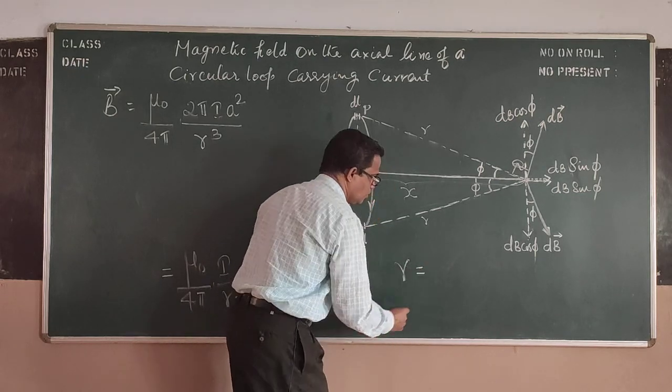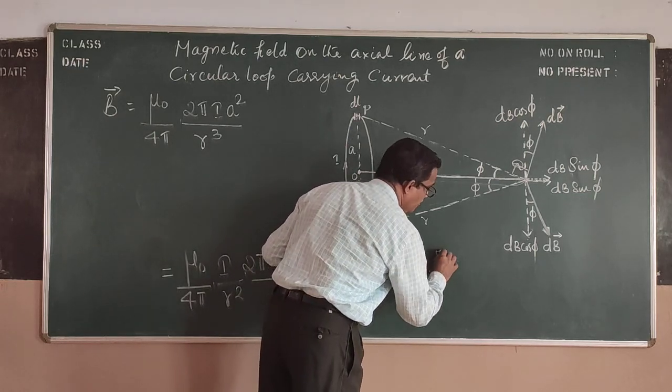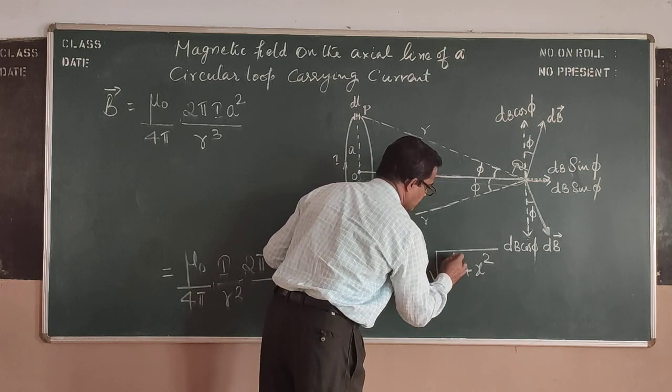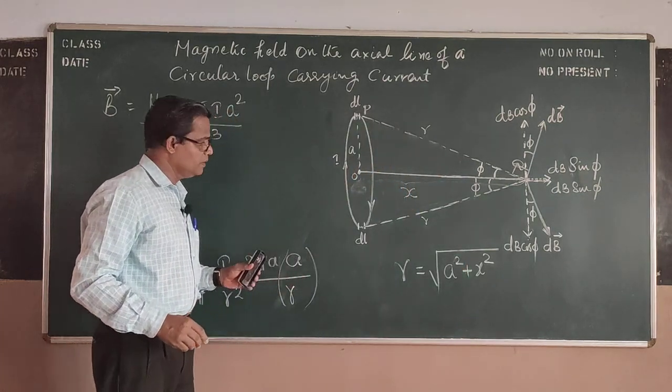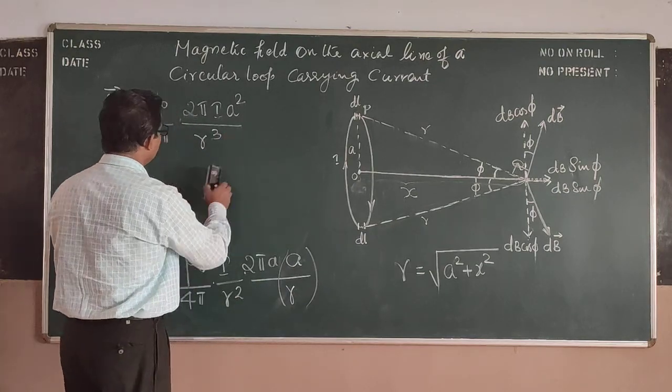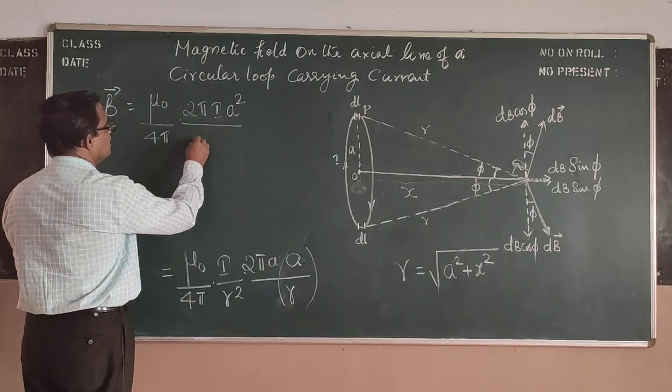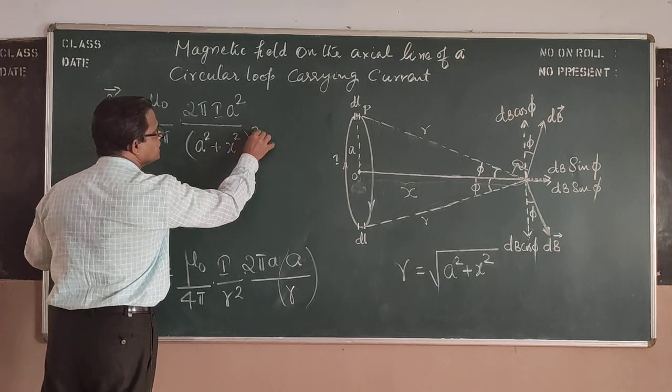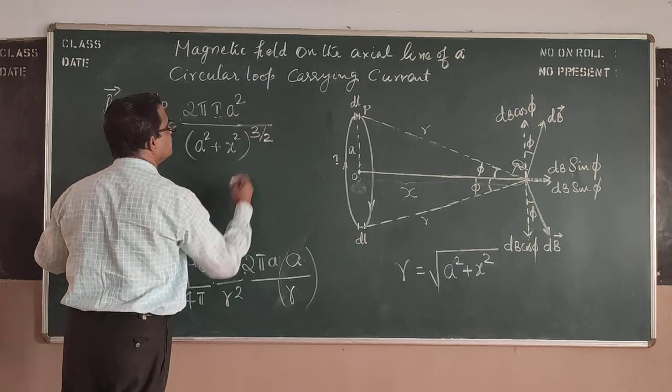Now what is this R cube? R cube is this distance in measurable quantities, this radius of the circular loop and the axial distance. Then R will be equal to root of A square plus X square and therefore R cube when I write it will be A square plus X square raised to 3 by 2.